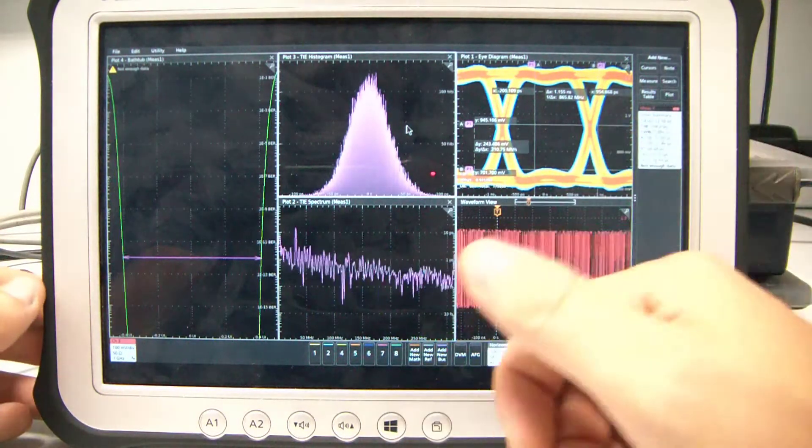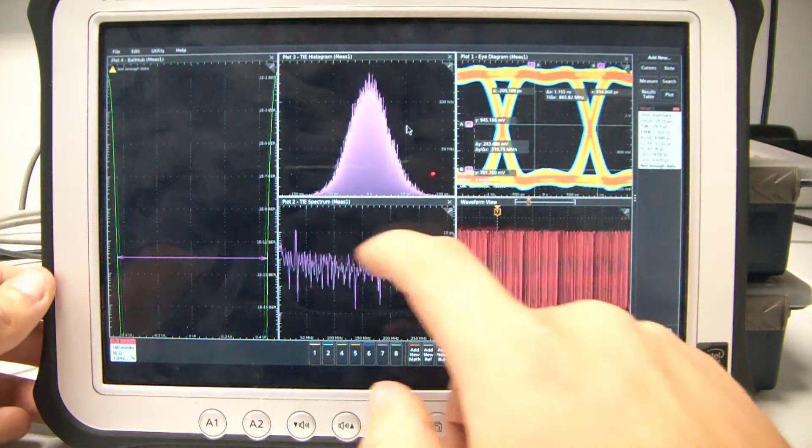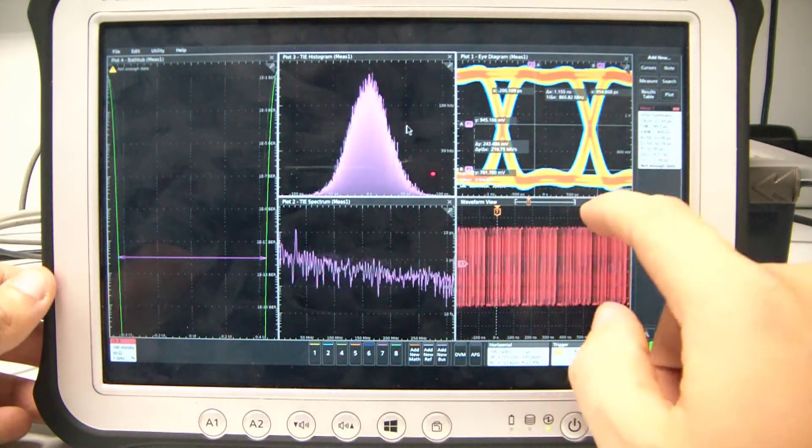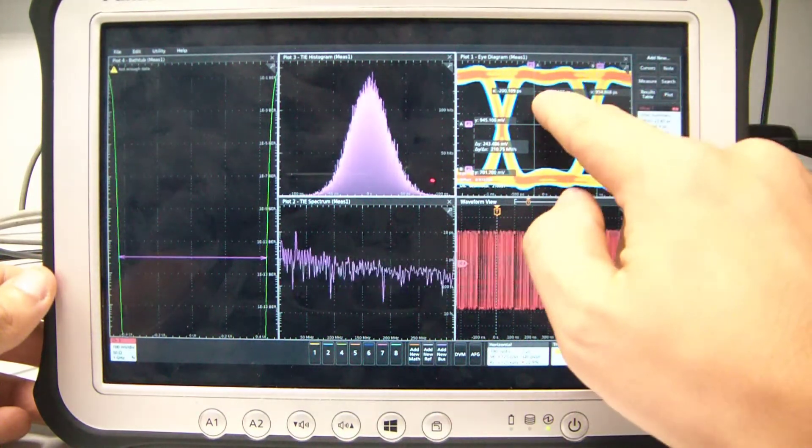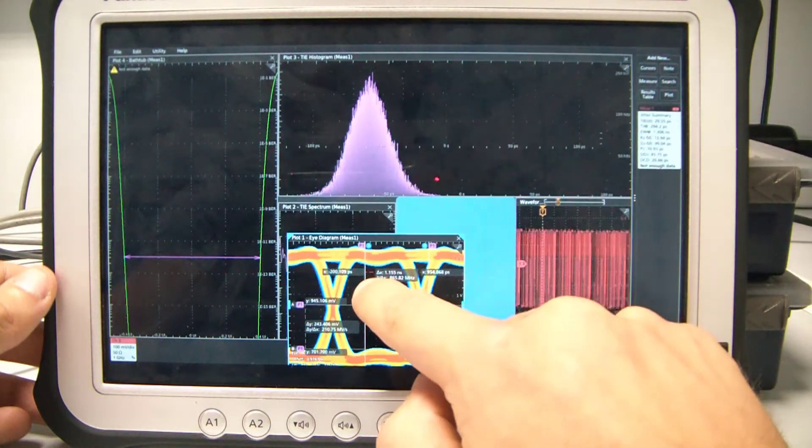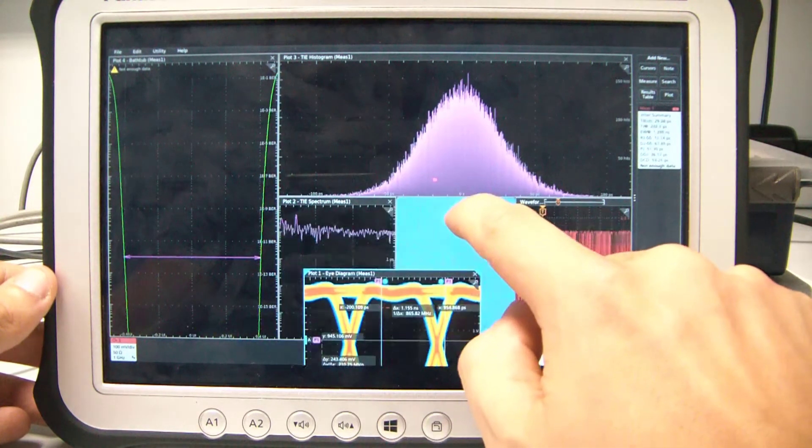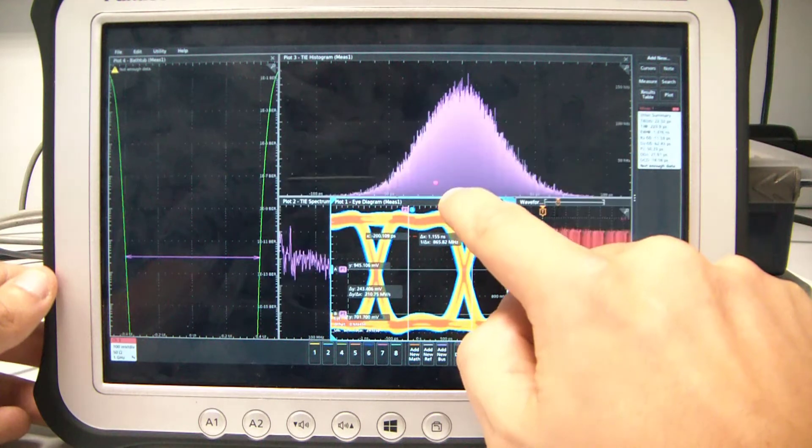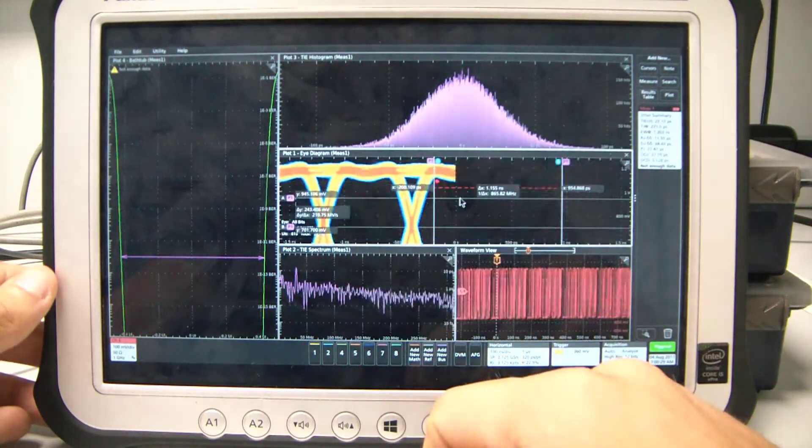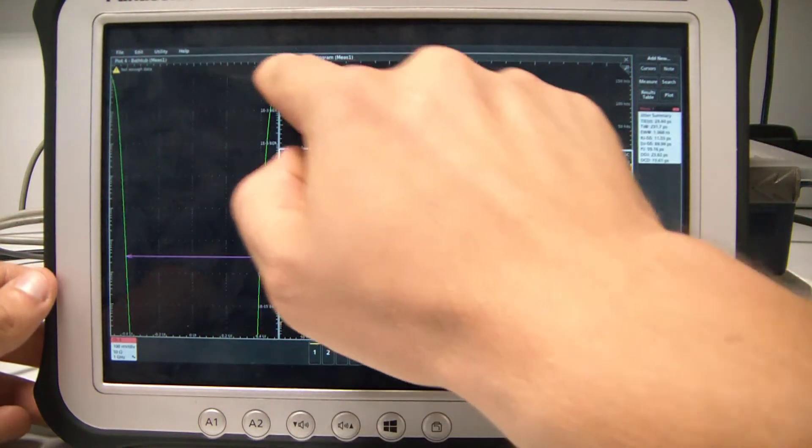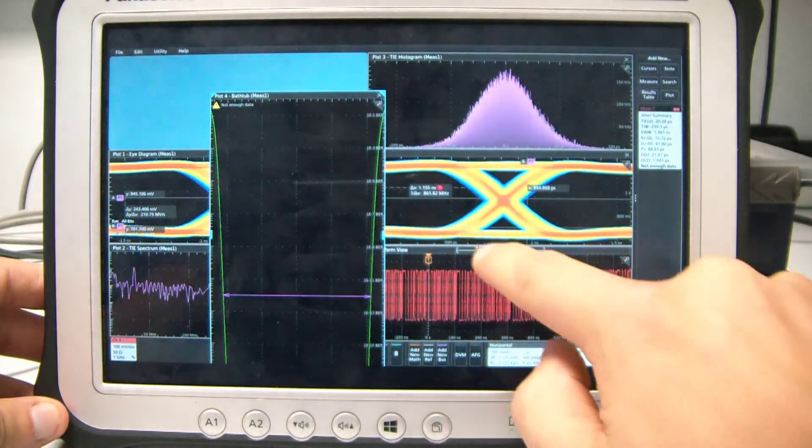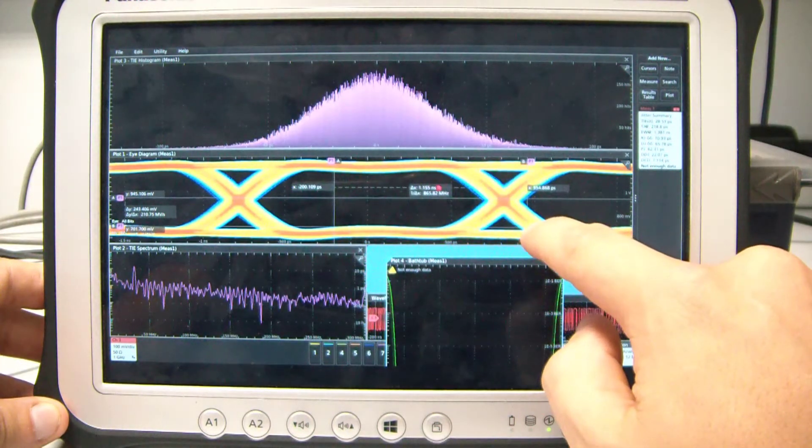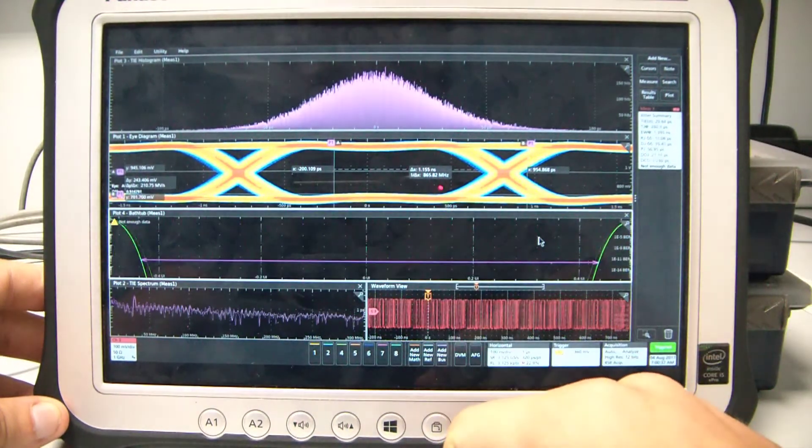And I can undock any window. For example, this eye diagram. Let's move it and dock it like this. OK, let's take this plot and move it on this side.